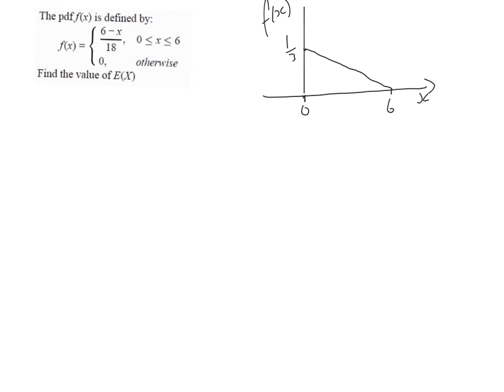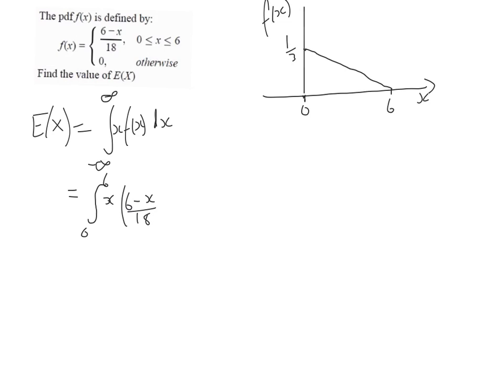We can see from the graph that there isn't any symmetry, so we're going to have to integrate. The expectation of X equals the integral of x·f(x) dx between the bottom and top limits. Applying our PDF, we have the integral between 0 and 6 of x times (6 minus x) over 18. I'm going to take out 1/18 and put it on the outside of the integration.